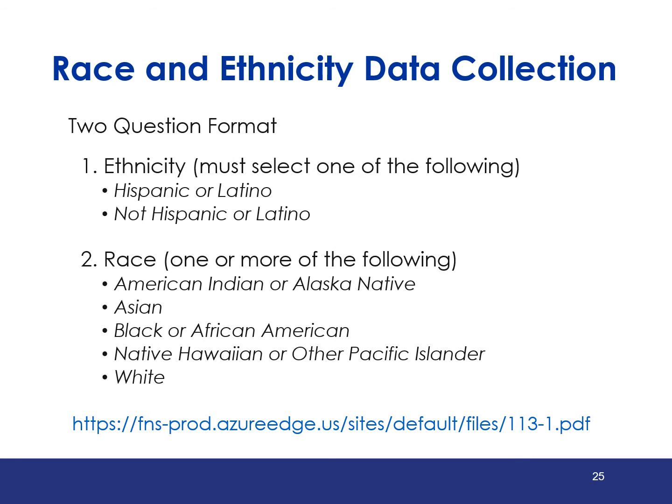Here we see the two-question format for race and ethnicity data collection. The first question is based on ethnicity and respondents may select either Hispanic or Latino or not Hispanic or Latino. The second question is based on race and respondents can select one or more of the following: American Indian or Alaska Native, Asian, Black or African American, Native Hawaiian or other Pacific Islander, or White.